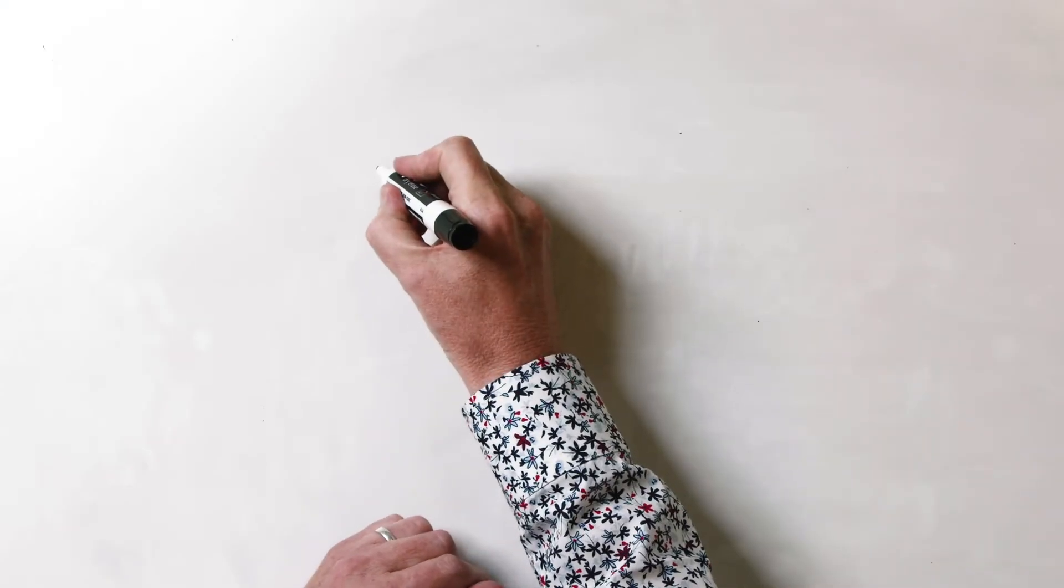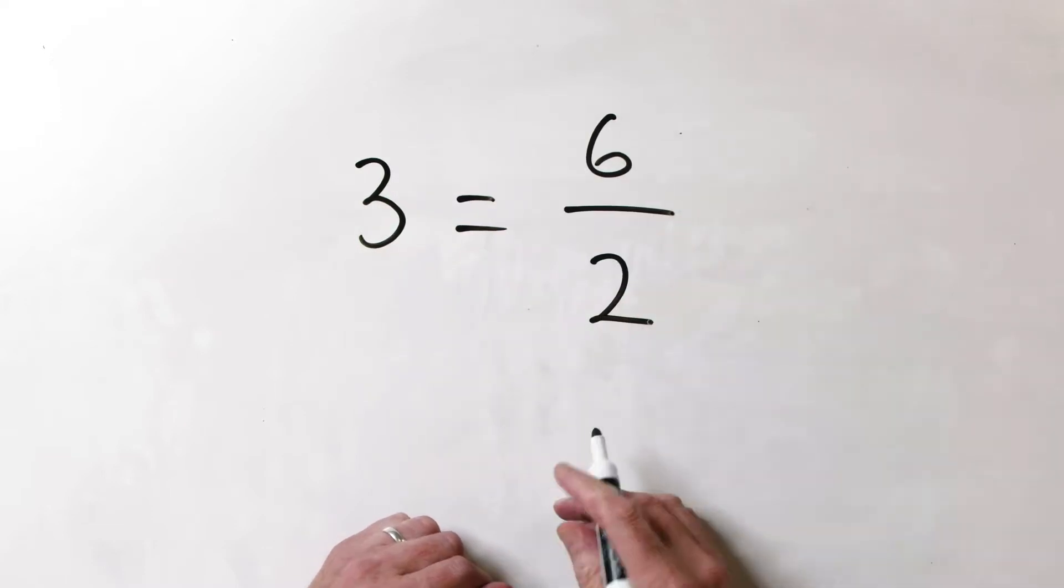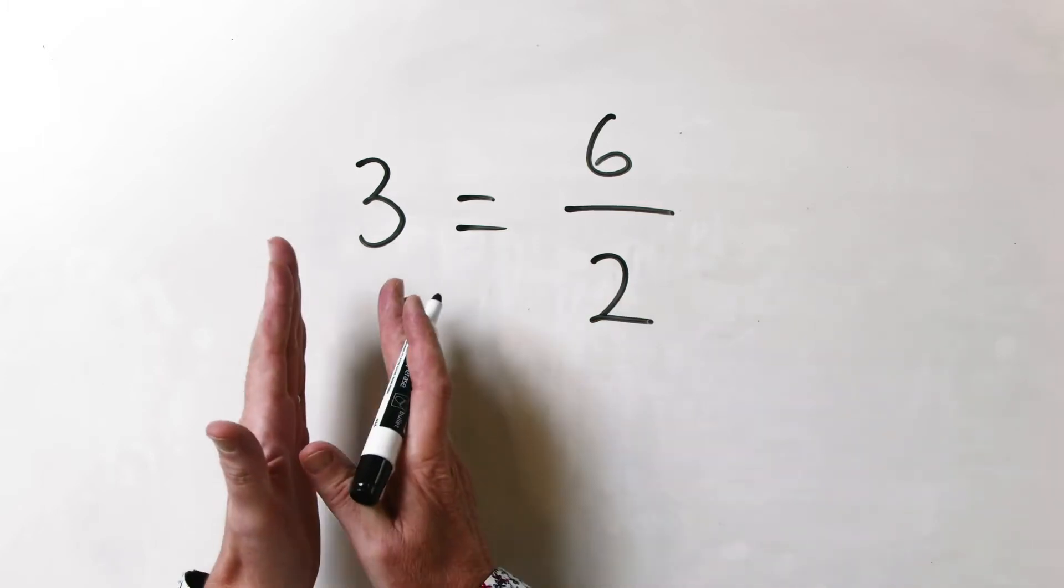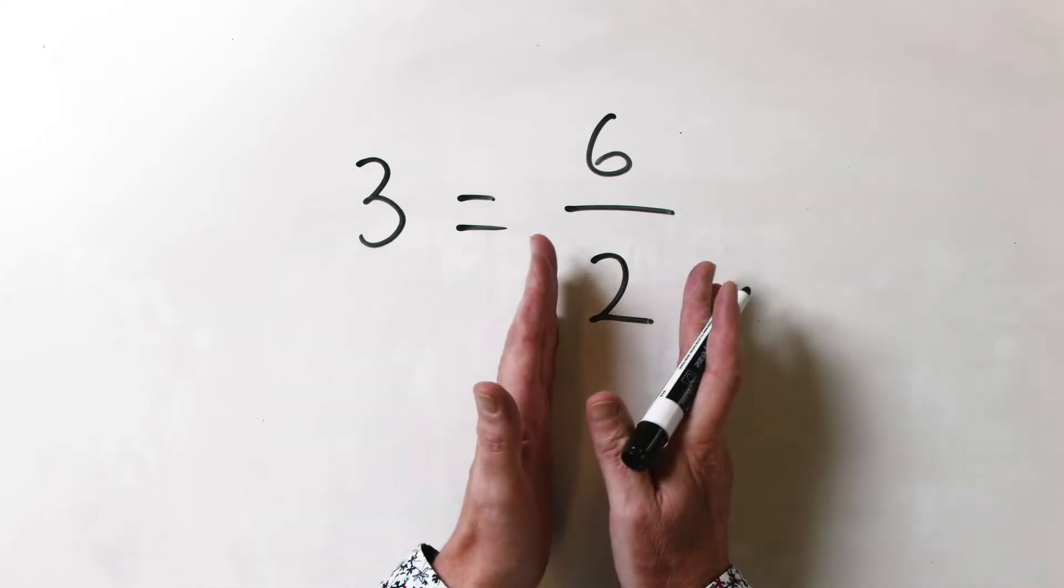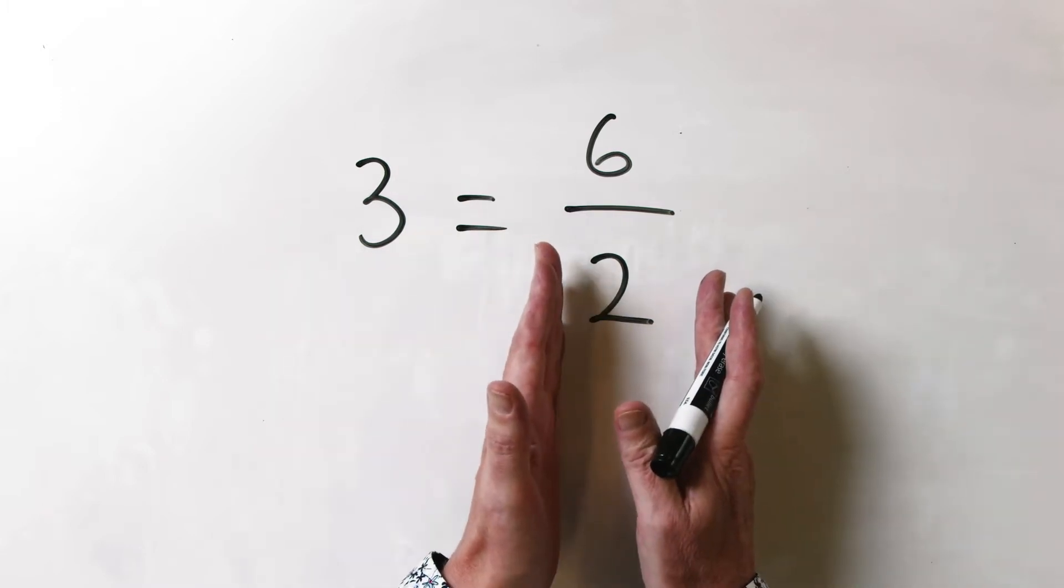Let's have a look at a nice simple mathematical equation. 3 equals 6 upon 2. What does it actually mean? An equation needs a left-hand side, it needs a right-hand side, and it needs an equal sign. Most importantly, what you've got on the left-hand side has got to be the same numerically as the right-hand side.